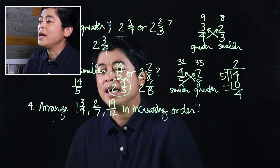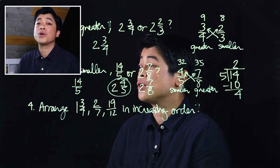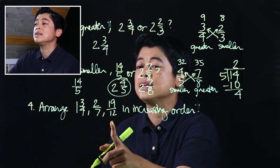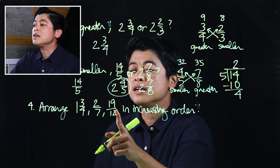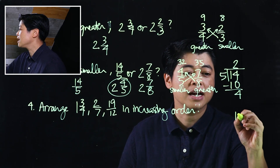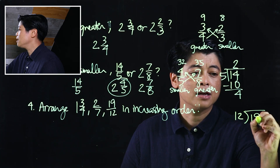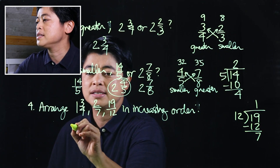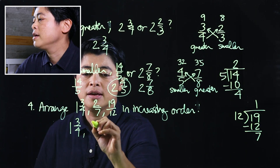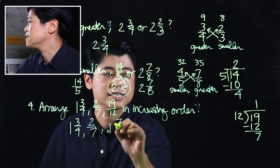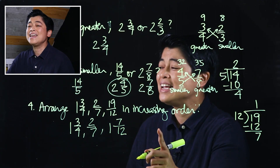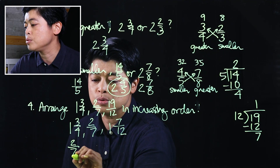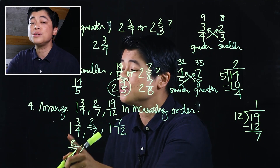The last problem says arrange in increasing order. We have a mixed number, a fraction, and an improper fraction. I'll convert 19 divided by 12: that's one with remainder seven, giving us one and seven-twelfths. So we have one and three-fourths, two-sevenths, and one and seven-twelfths. Clearly the smallest is two-sevenths, so we start with two-sevenths.